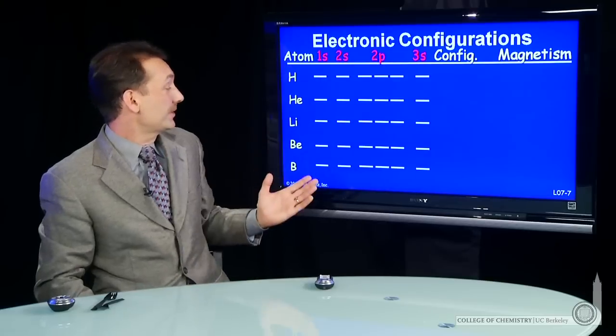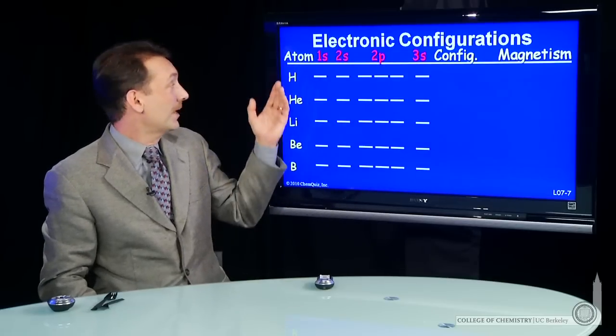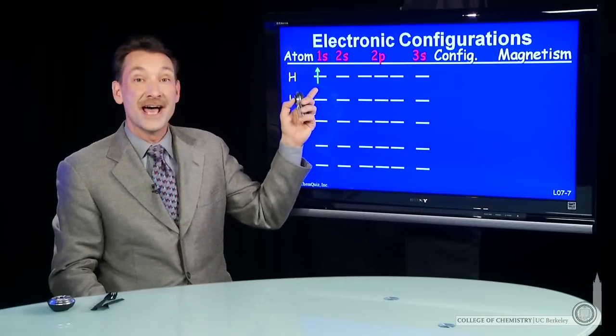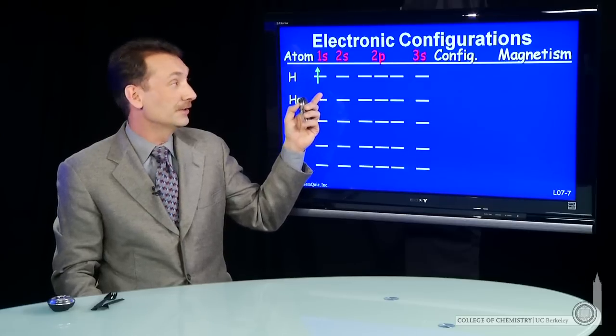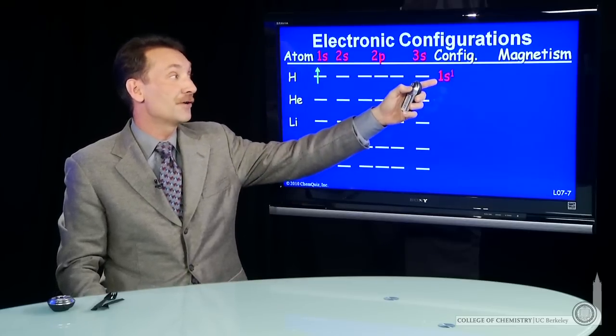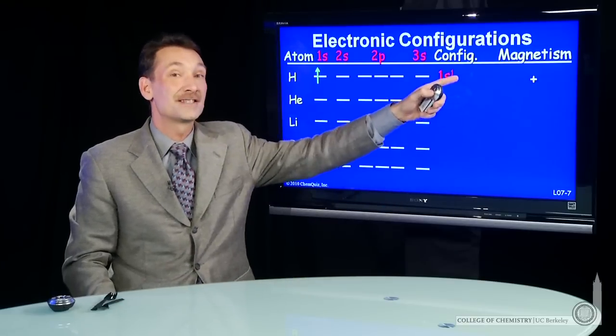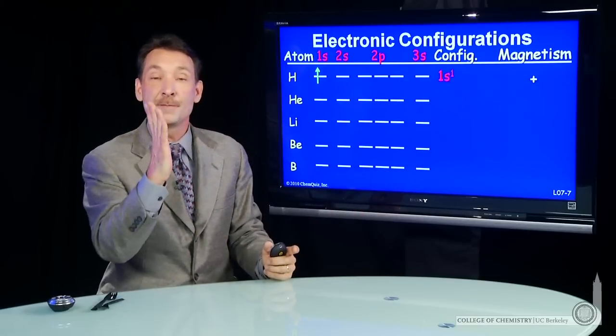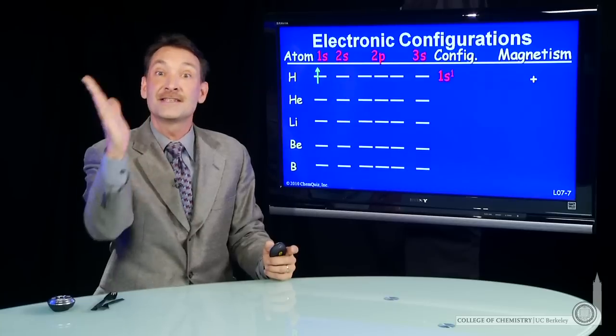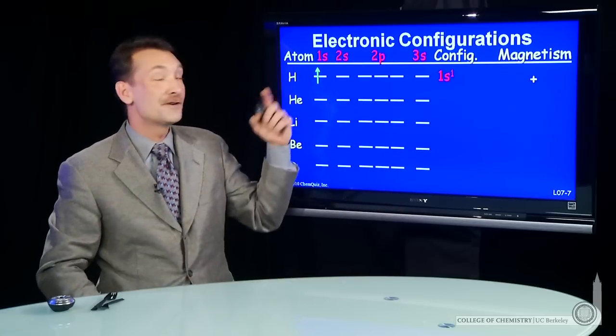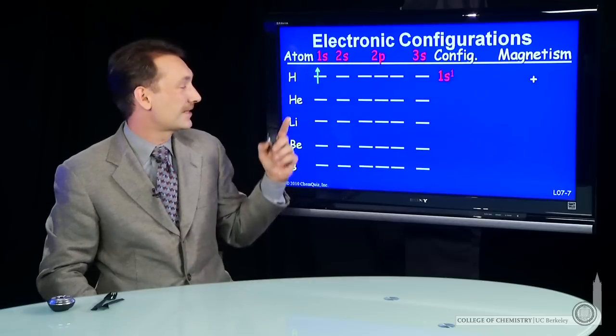So let's actually do that. Here's the first few elements on the periodic table. Hydrogen has one electron. It will enter the 1s, the lowest available orbital, and will give the electron configuration 1s1 to hydrogen. Now hydrogen will be slightly magnetic because that unpaired electron imparts a magnetism to the whole atom. It's called a paramagnetic species. Hydrogen is paramagnetic in its atomic state.